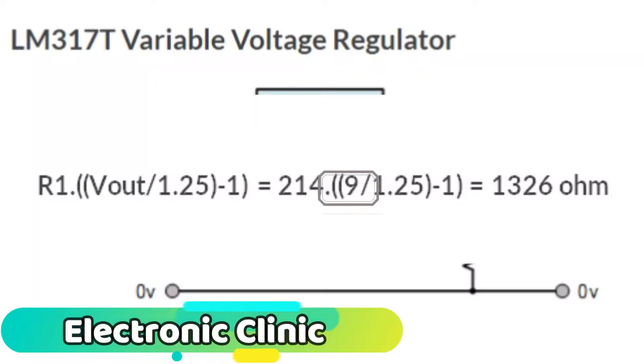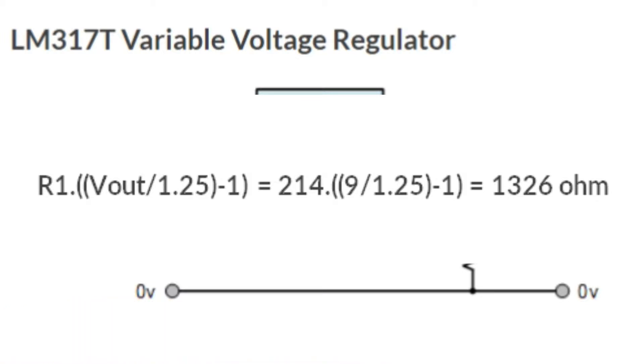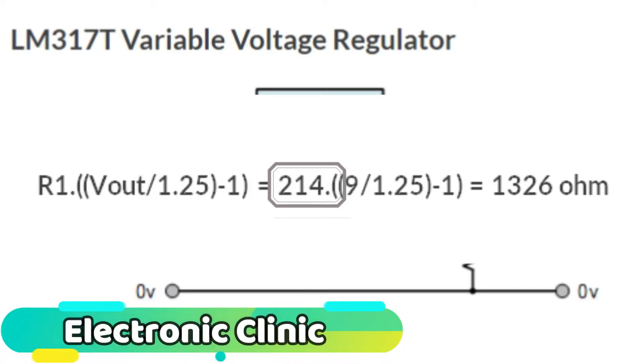If we know the value of the required output voltage Vout, let's say 9 volts, and the feedback resistor R1 is 214 ohms, then we can calculate the value of R2.